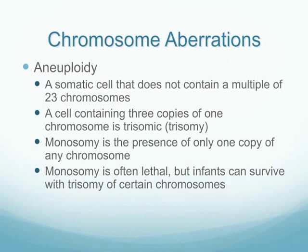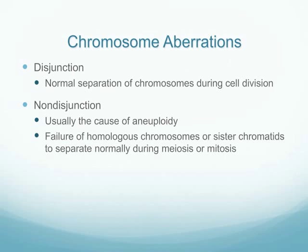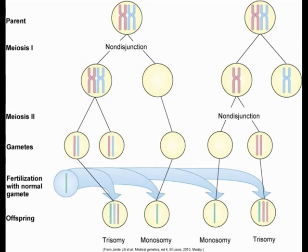Although disjunction is a normal process during cell division, non-disjunction can occur and result in aneuploidy. What usually happens is the chromatids don't separate normally during meiosis or mitosis. This diagram shows both normal disjunction and non-disjunction occurring, which leads to a whole range of different genetic problems in the offspring.